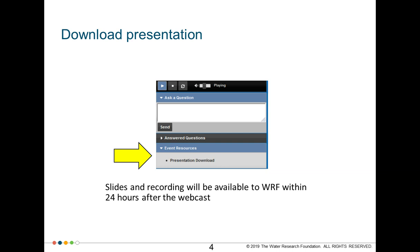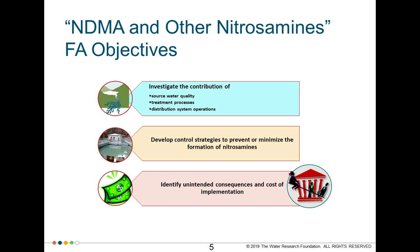This project is one of the projects that the Foundation has funded through what we call a focus area. In 2012, the Foundation decided to develop a multi-year research agenda focusing on NDMA and other nitrosamines. The objective is threefold: one is to identify the contribution of source water quality, treatment processes, and the distribution system to the total pool of nitrosamines. The second objective is to develop control strategies to minimize or prevent the formation of nitrosamines. And finally, to identify unintended consequences and the cost of implementation of nitrosamine control strategies.